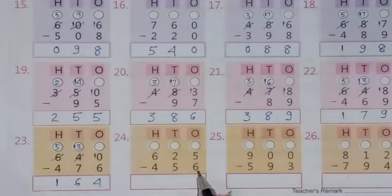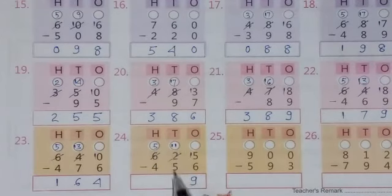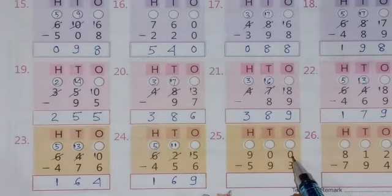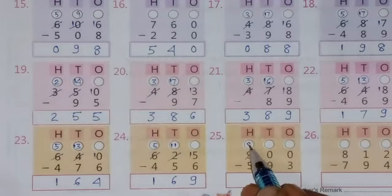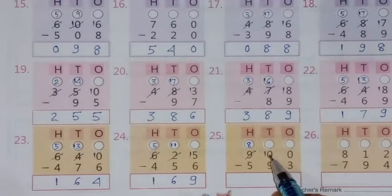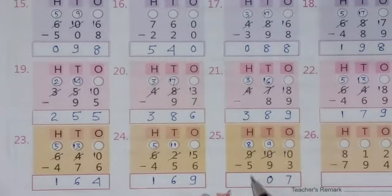Here 5 minus 6 is not possible, so borrow from this digit — this will become 1 and here will be 15. 15 minus 6 equals 9. Then 1 minus 5 is not possible, so borrow from this digit — this will become 5 and here will be 11. 11 minus 5 equals 6. 5 minus 4 equals 1. Here 0 minus 3 is not possible and the next digit is also 0, so borrow from the digit beyond — this will become 8 and here will be 10. Now 0 minus 3 is not possible, so borrow from this digit — this will become 9 and here will be 10. So 10 minus 3 equals 7. 9 minus 9 equals 0, and 8 minus 5 equals 3.